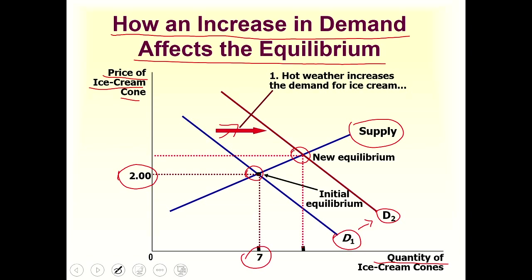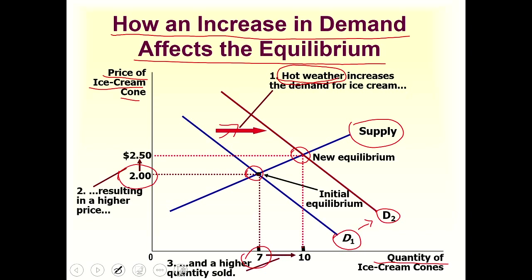We always get a shift when the variable that has changed is not present on the graph. Here the variable that changed is the weather — hot weather increased the demand for ice cream. So whenever weather changes and demand increases, it leads to a rightward shift of the demand curve. At the new equilibrium we have a higher price of 2.5 dollars and a higher quantity sold of 10.